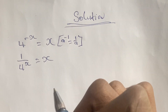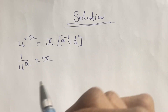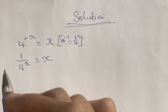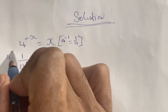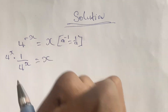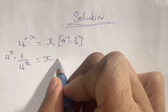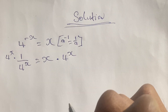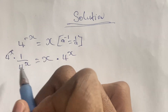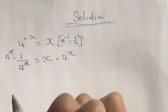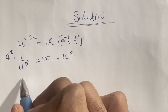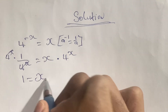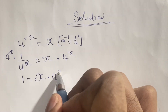As we said, we are going to bring x on one side of this equation, so we multiply both sides by 4 to the power of x. On the left we have 4 to the power of x times 1 over 4 to the power of x, and on the right we have x times 4 to the power of x. On the left, 4 to the power of x cancels out, leaving us with 1, and on the right we have x times 4 to the power of x.